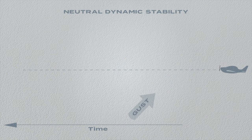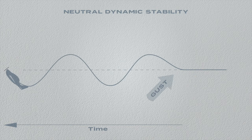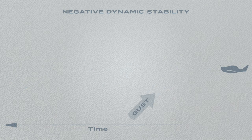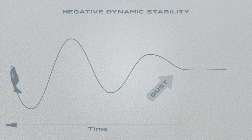Neutral dynamic stability is the tendency of the aeroplane to continue to oscillate without settling down. Negative dynamic stability is the tendency of the aeroplane to continue to oscillate with an increasing amplitude. This is not desirable, so aeroplanes are not designed this way.